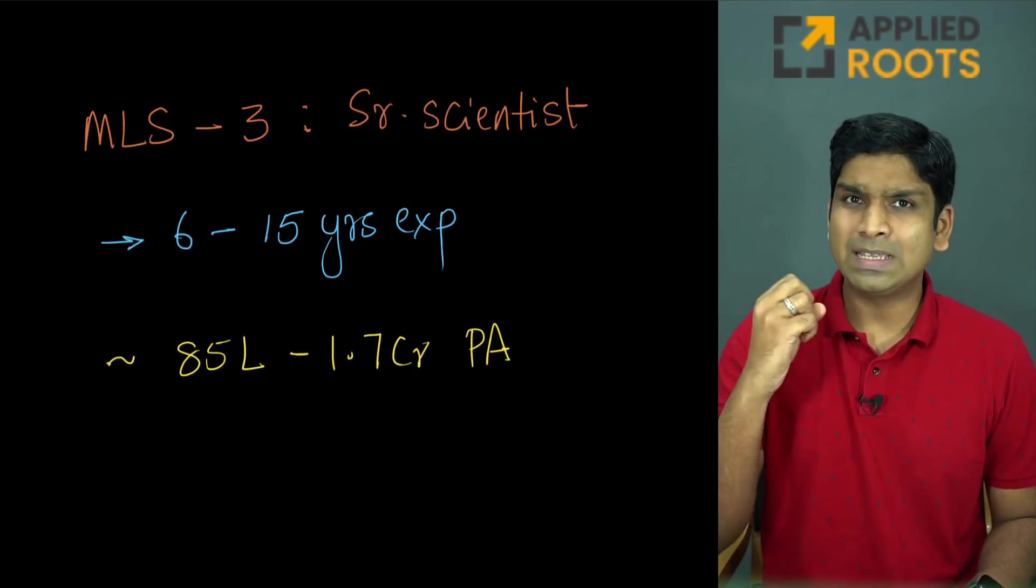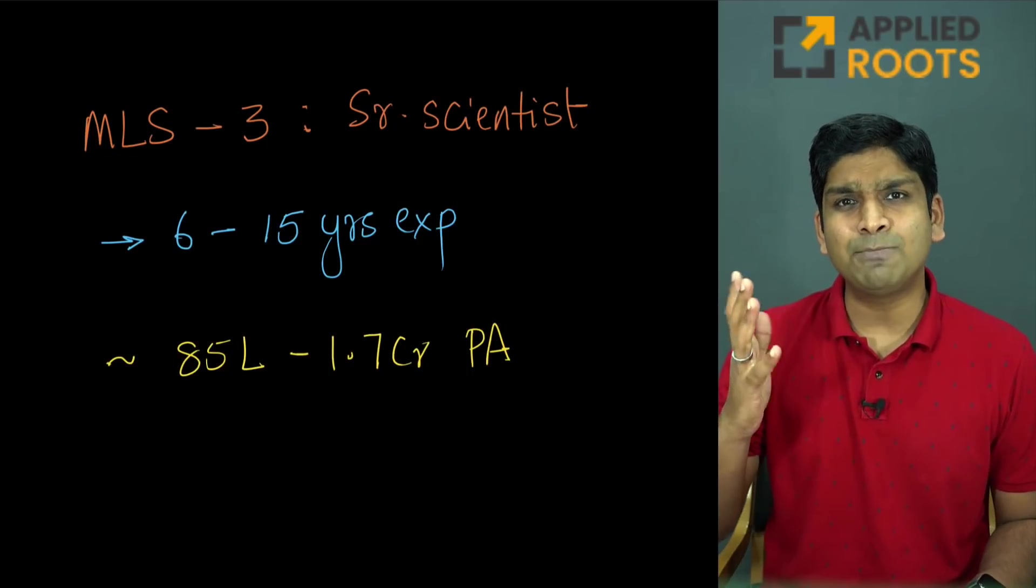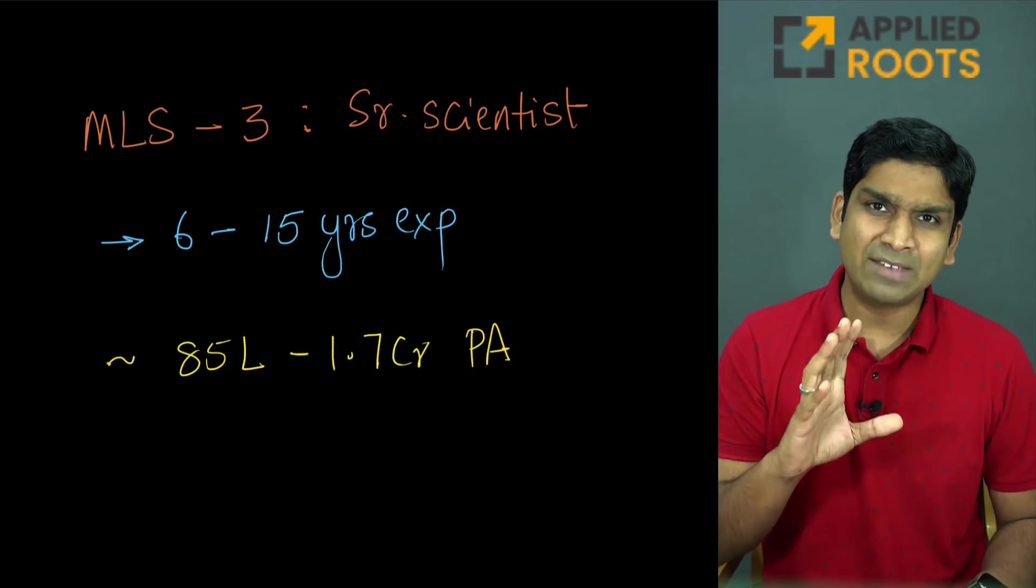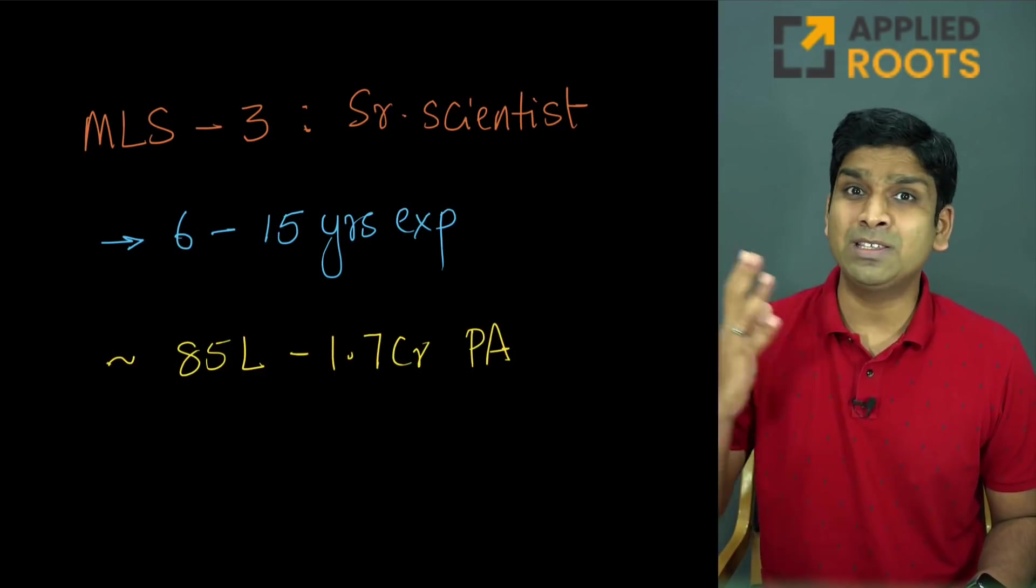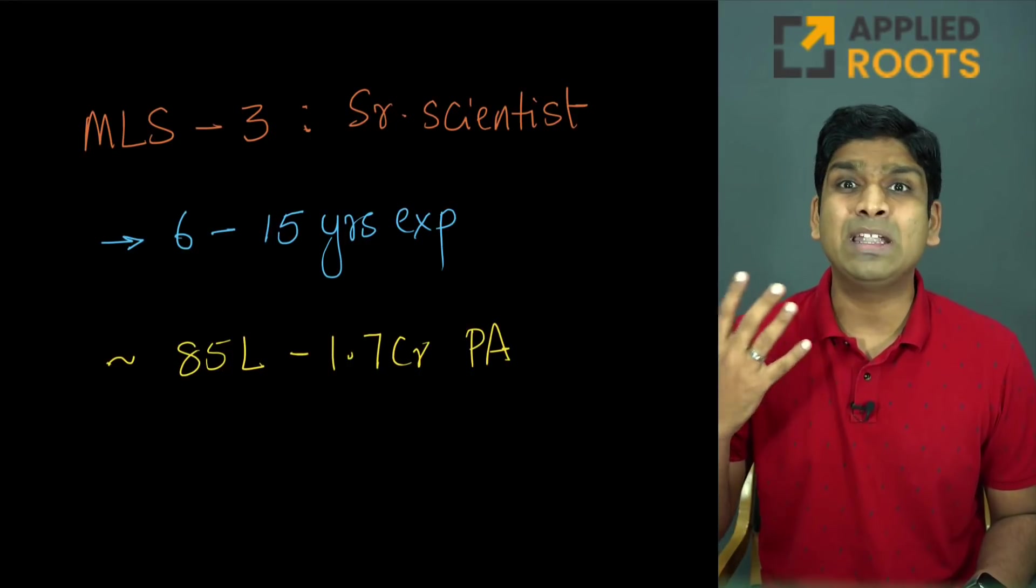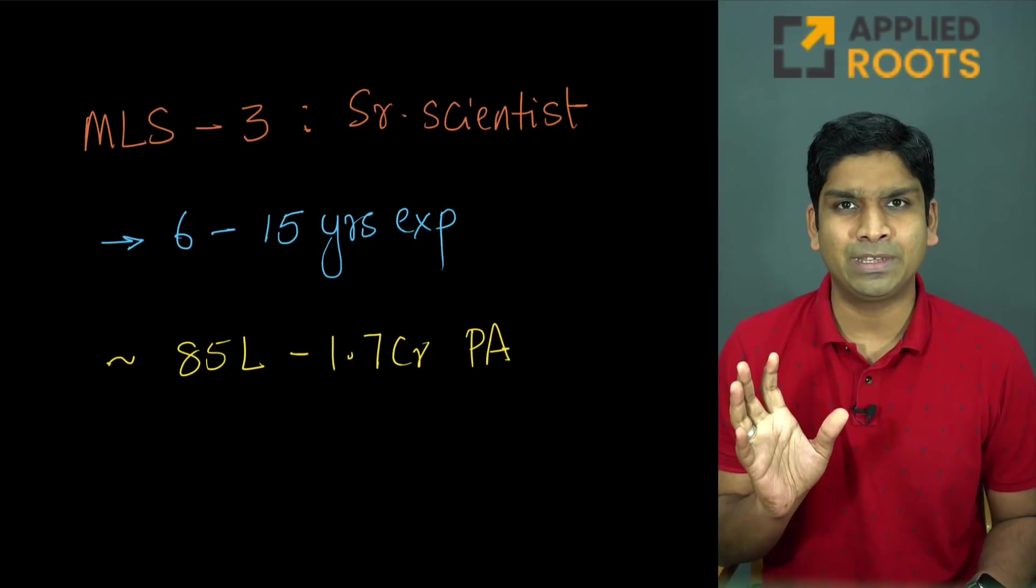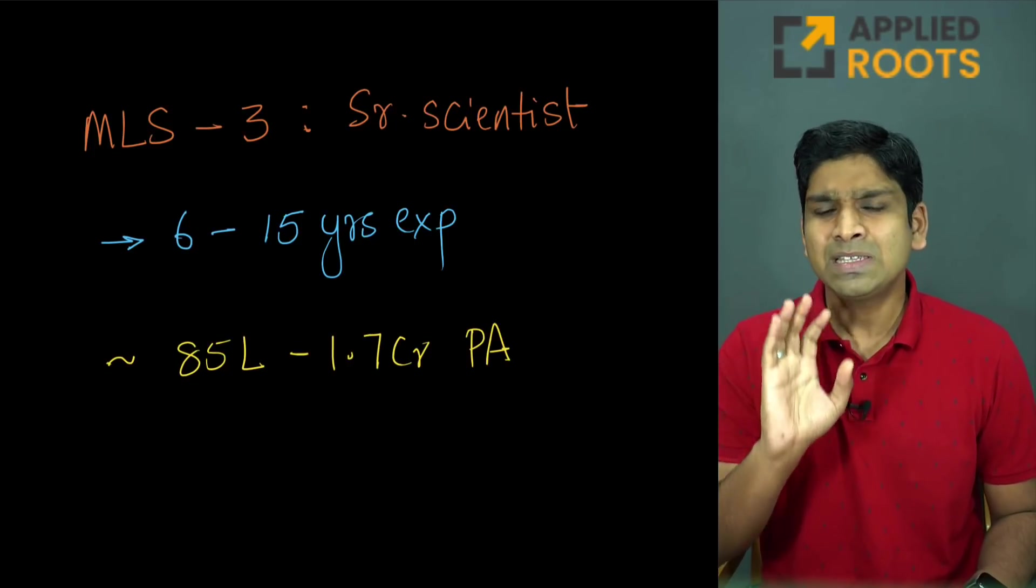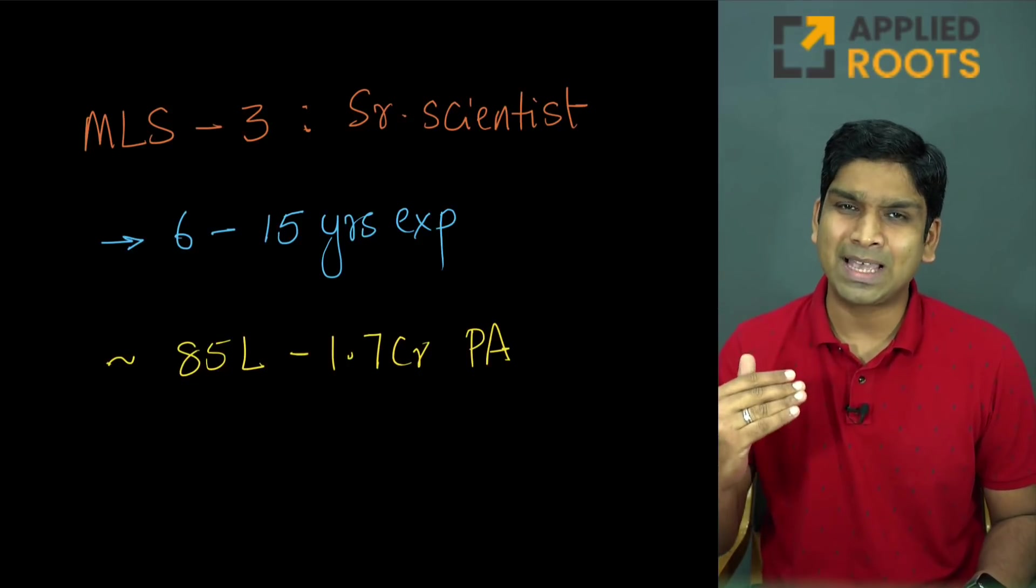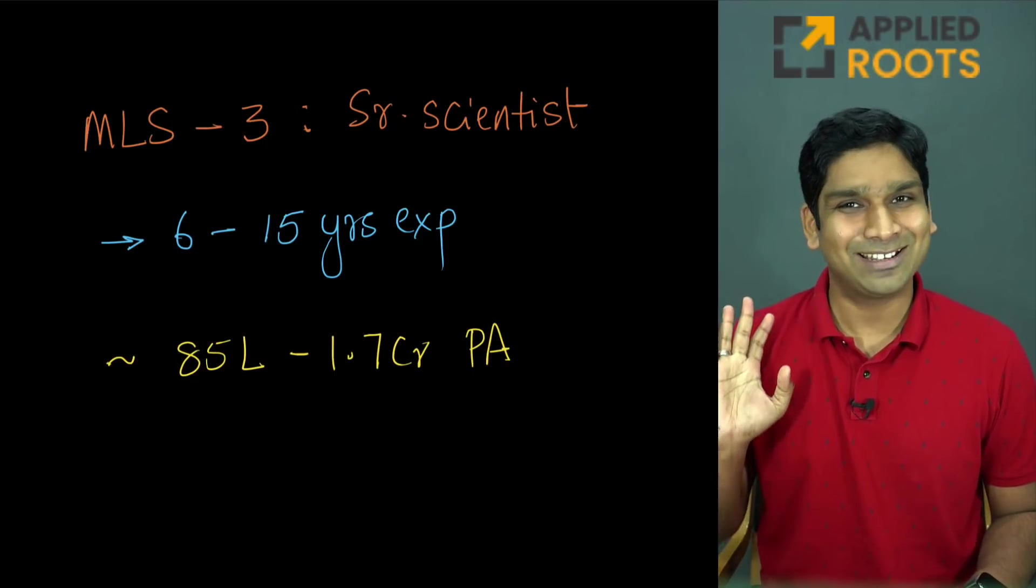The third role is called machine learning scientist three or also referred to as applied scientist three, and these are typically referred to as senior scientists. These people typically have a minimum of six to seven years, and the experience could extend to 15 or even 20 years. The typical range you'll encounter is six to 15 years of experience, and their compensations in FANG-like companies is anywhere from 85 lakhs to 1.7 crores per annum. Please remember as your salary increases, your tax that you have to pay to government of India also increases.